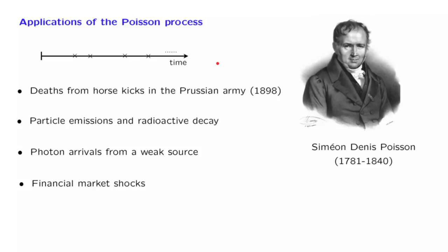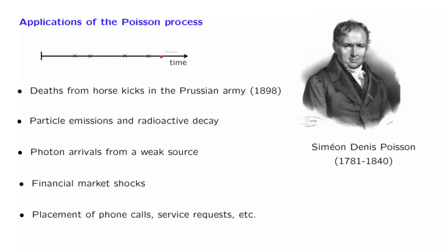These days, the predominant source of applications for the Poisson process is in various service operations. You are the phone company — phone calls get placed at random times, and because there are several people involved who are uncoordinated with each other, those calls get placed at completely random times. The same story goes for service requests to a web server or service requests to any kind of company. Many applications being studied today, which rest on Poisson models, involve service operations of this type.